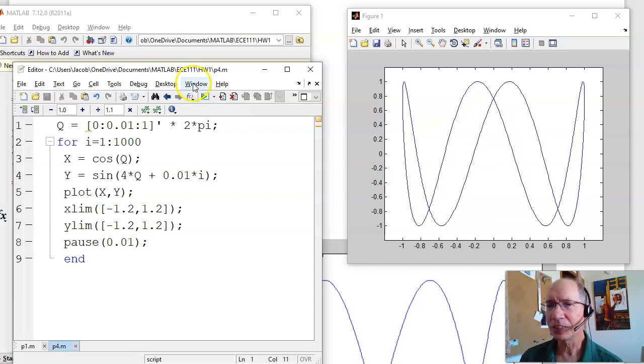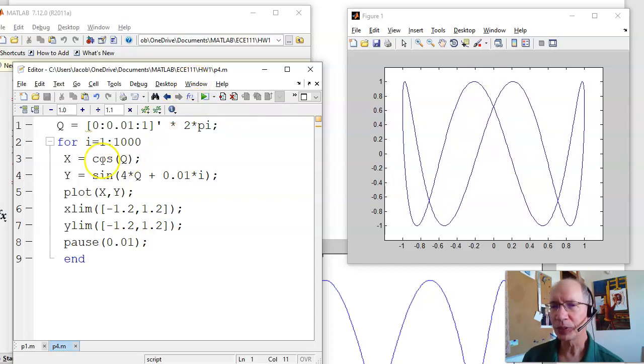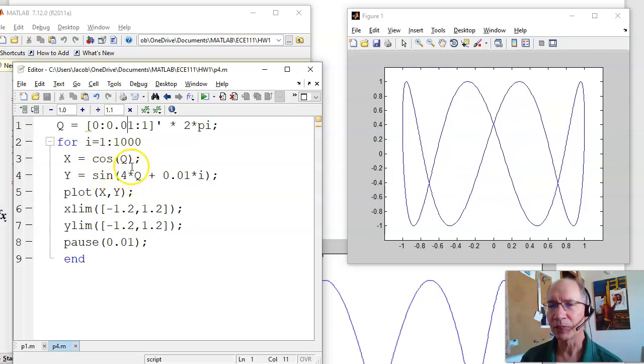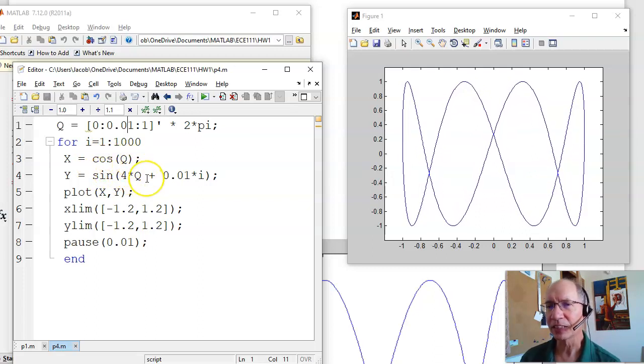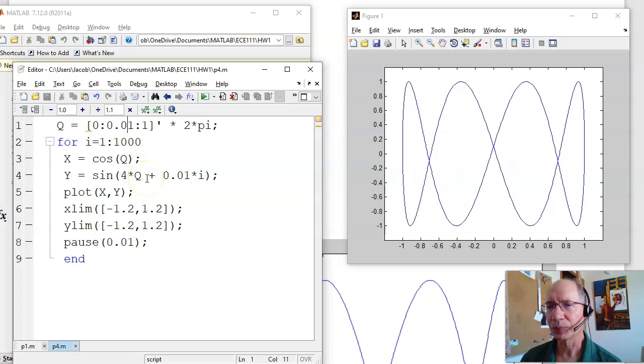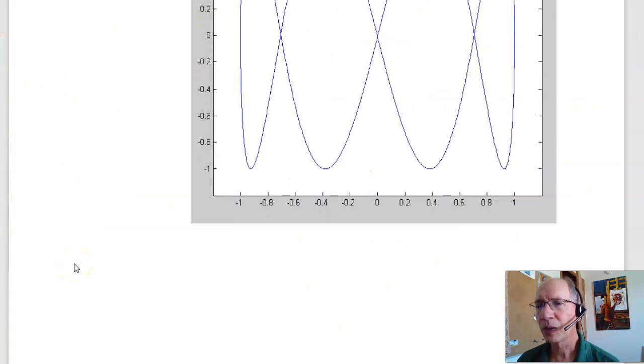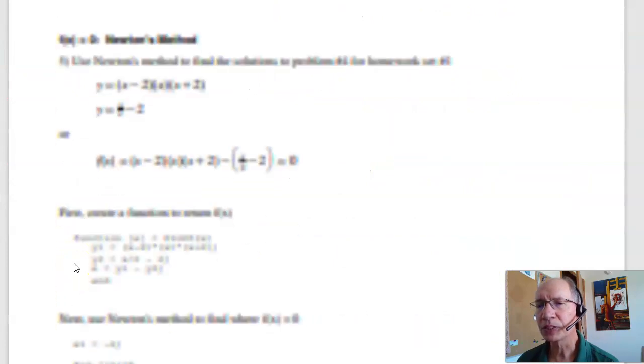All that is, is you've got an X input and a Y input. X is a sine wave. Y is a sine wave at a different frequency, and they're slightly out of sync. That's causing the rotation. Okay, so that's the first set of functions. That's just using scripts in MATLAB.